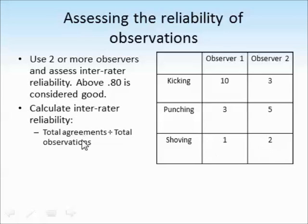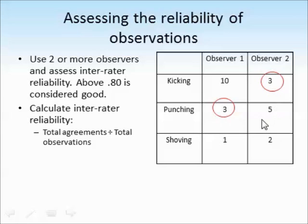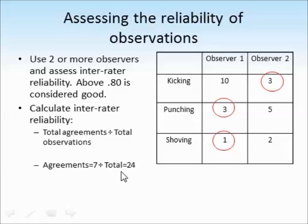To calculate the inter-rater reliability, we look at the total agreements divided by the total number of observations. The agreements are generally the smallest number — here they've agreed on three for kicking, three for punching, and one for shoving, giving seven total agreements out of 24 total observations, which gives us 0.29. We look at anything above 0.80 as being high inter-rater reliability, meaning the two observers are agreeing and recording the same data. Here there's a lot of disagreement, so this observation is quite unreliable.